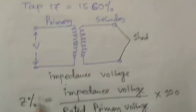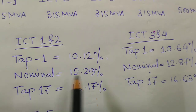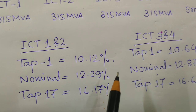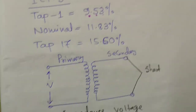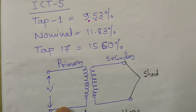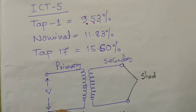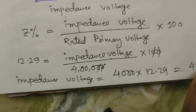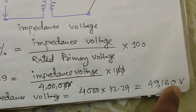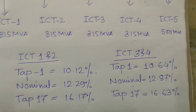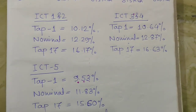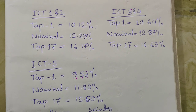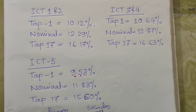So the impedance voltage of this ICT at the nominal tap is 49.16 kV. This means the minimum voltage you have to apply to the transformer to get the rated short circuit current is 49.16 kV. This is a very interesting and important topic regarding the percentage impedance of transformers. Thank you for watching.